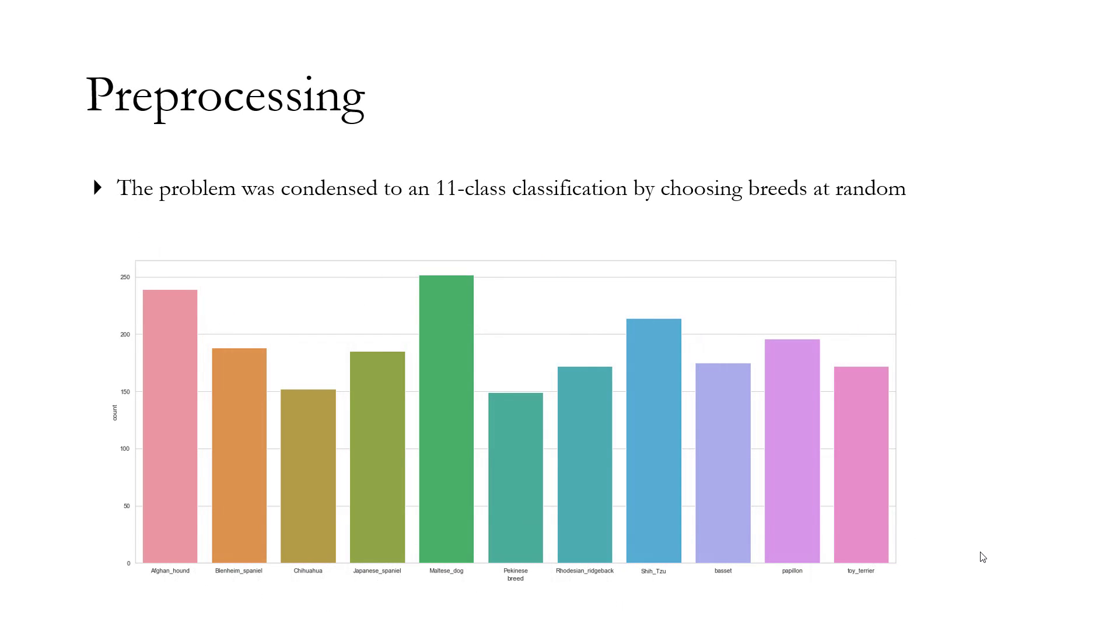As part of preprocessing, the first thing I did was I condensed the problem into an 11-class classification problem by choosing dog breeds at random. This was essentially done because of the computing power at the moment that I have. I did my project mainly on Jupyter Notebook in my laptop and also used Google Colab. I tried to run a model on 120 breeds - it was way too slow. So I decided to condense this down into a smaller classification problem, and later if I have higher compute power, I can extend this to 120 breeds.